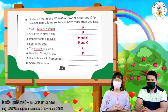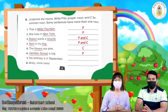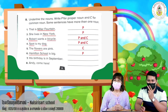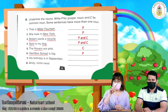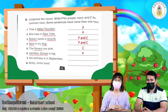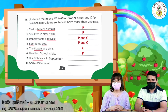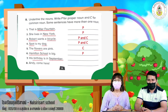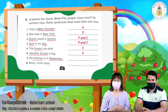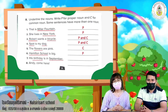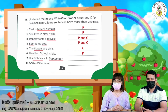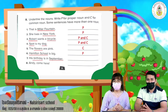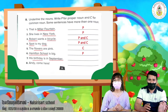Number seven: 'His birthday is in September.' In this sentence we have two nouns — birthday and September. Birthday is a common noun. September is a proper noun. Write C and P.